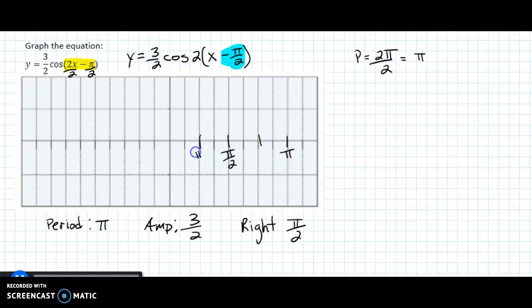So π/2, half of π/2 is π/4, and 3/4 of π is 3π/4. And then we have 3/2. Let's go ahead and kind of make this with some tick marks. So that's 3/2 and negative 3/2. 3/2 is just 1.5.